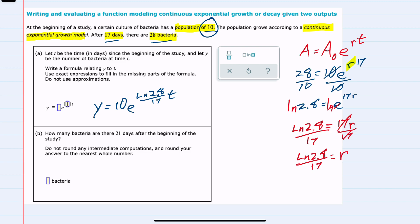For part B, we're asked to find how many bacteria there are after 21 days. We can substitute directly into this equation: y equals 10e to the ln(2.8) over 17 times 21.